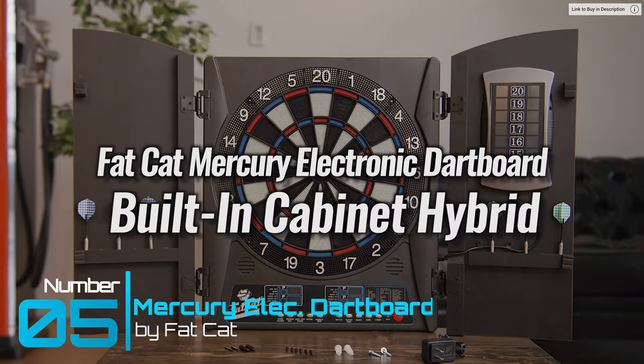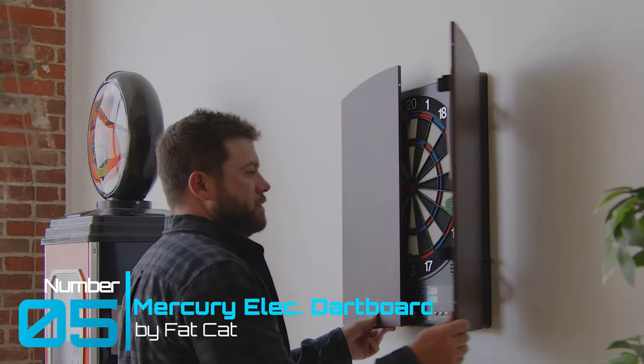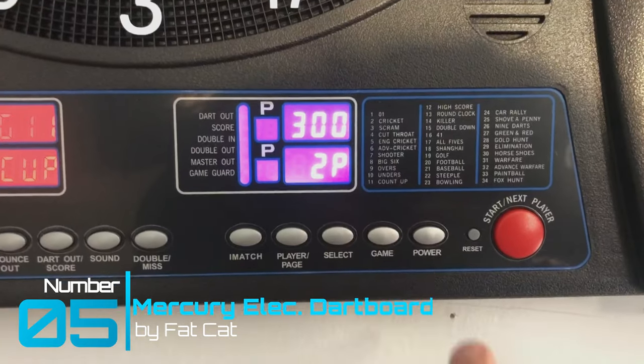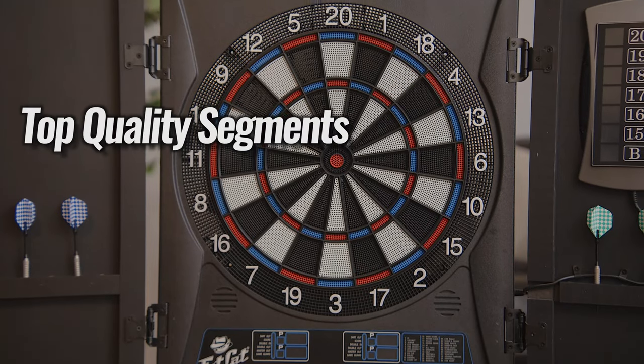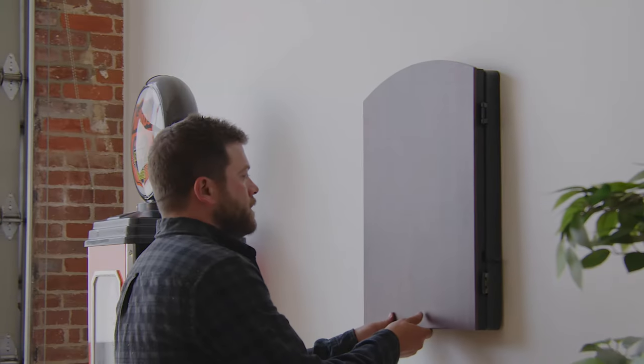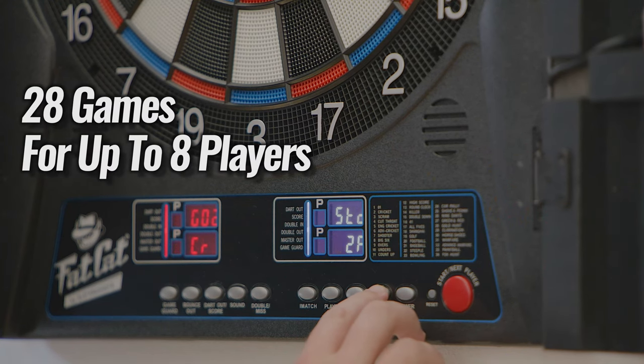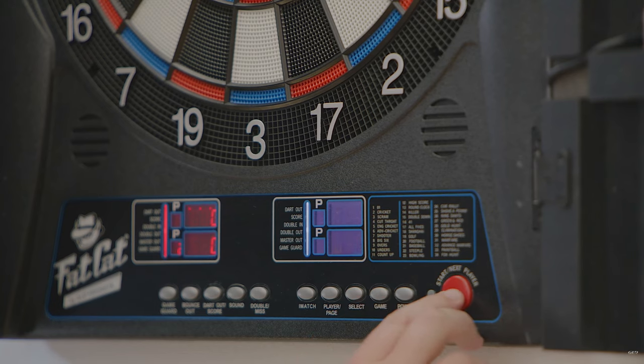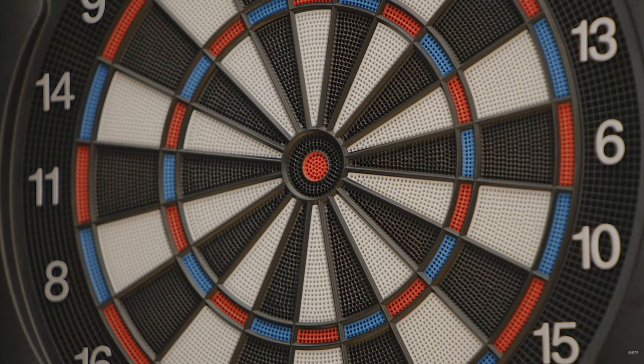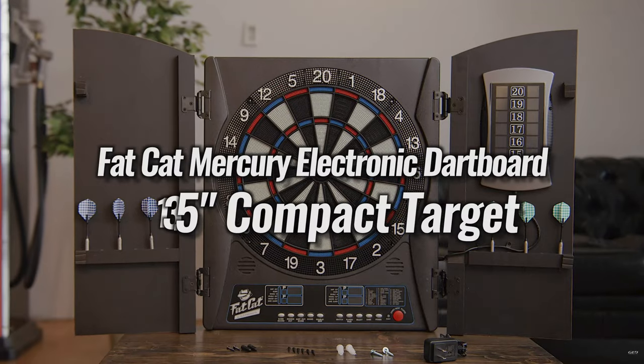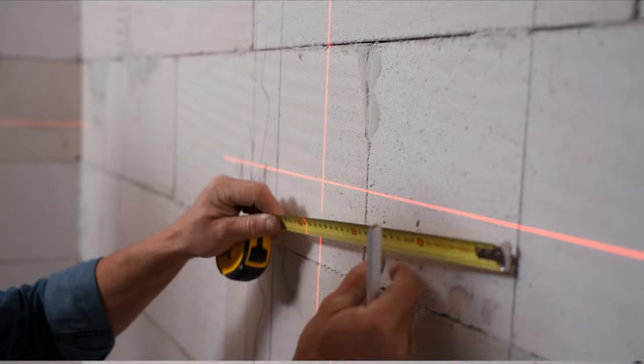Gadget number five: Mercury Electronic Dartboard by Fat Cat. This electronic dartboard comes with its own cabinet, darts, and digital game system. It's built with long-term use in mind and quality. Just open the cabinet and feast your eyes. Comes with built-in storage and the onboard computer plays up to 28 games for up to eight players. There is a side LED marker to help enhance the experience.